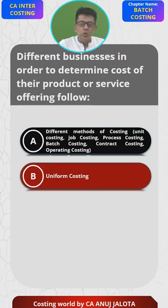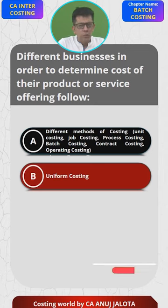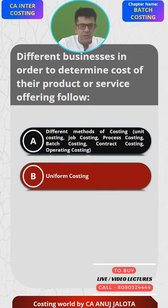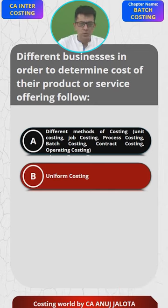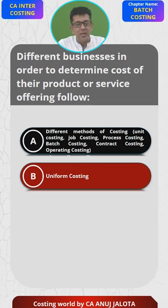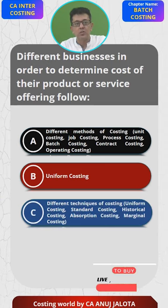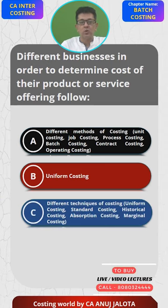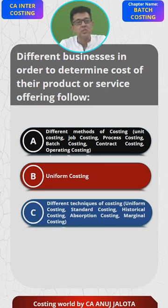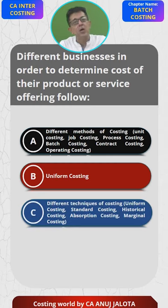Option B: Uniform costing. Uniform costing is like accounting standards whereby different companies follow the same set of costing policies so that their costs are comparable across companies. Then option C covers different techniques of costing like uniform costing, standard costing, historical costing, absorption costing, and marginal costing. These are various techniques used to find out cost.